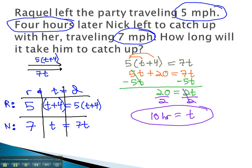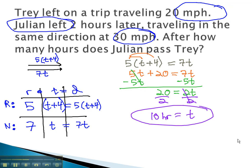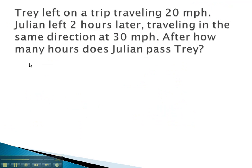Let's try another example, where we see one person trying to catch up with the other. In this problem, Trey leaves on a trip. Julian leaves later, traveling to catch up and pass him. Let's organize our information again in a table. We know that rate times time equals a distance.